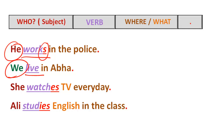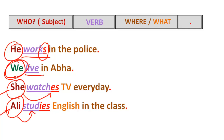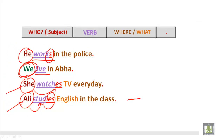Since 'we' is a plural pronoun, the main verb takes no addition. Next: She watches TV every day. The subject is singular, so it requires ES with the main verb 'watch.' Last example: Ali studies English in the class. Ali is a singular name — a single person — and the main verb is 'study.' Because it is a singular subject, we add IES to the main verb.